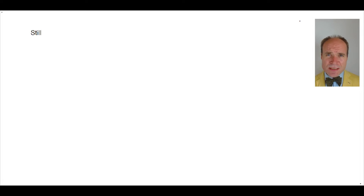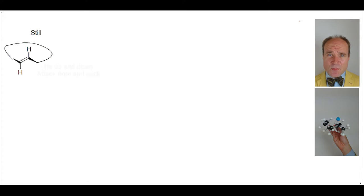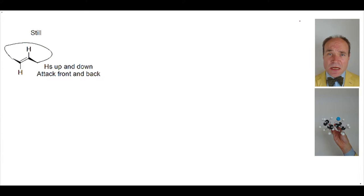There could be two key orientations of an alkene within the ring. Firstly, where the hydrogens, in this case, were facing up and down, and a chemical interacting with the pi orbital would have to approach from the front or the back as we're looking at it here.